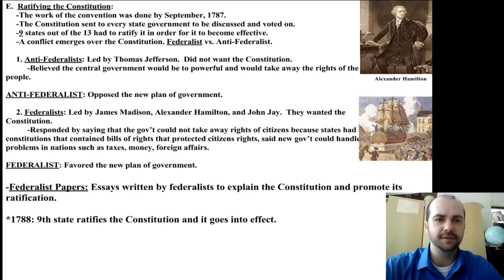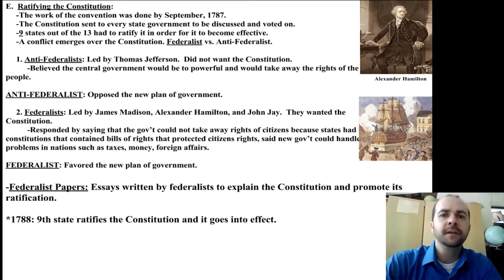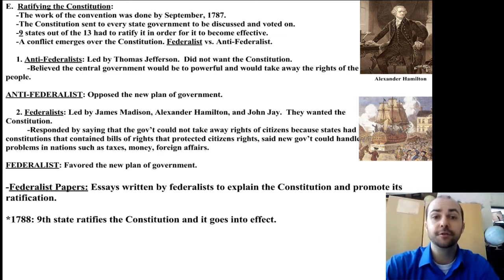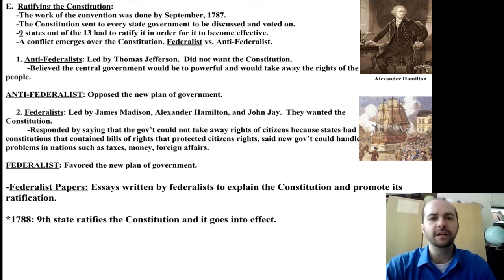The Anti-Federalists — "anti" means against — were against this federal system of government. This group was led by Thomas Jefferson, the writer of the Declaration of Independence. He did not want the new Constitution. He believed that the central government would be far too powerful and would take away the rights of the people. He believed that there should be a Bill of Rights and that the government should be weaker. He would have supported a government similar to the Articles of Confederation — just a few minor tweaks — with a weak central government and strong state governments.